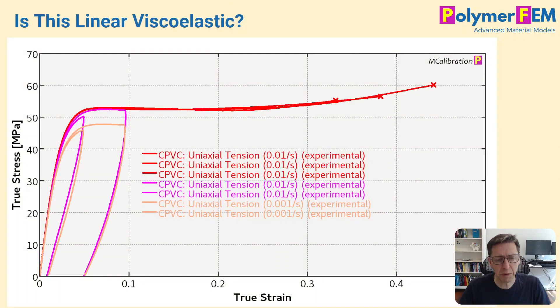Can you figure it out by simply looking at the stress-strain curve? So here's some true stress, true strain data for CPVC in uniaxial tension, different strain rates, cyclic loading. Is this material linear viscoelastic?